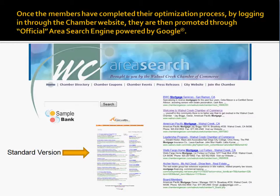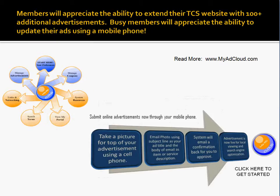This is the My Ad Cloud system. Once you've completed your Traffic Catcher page, you have the option to click a button to create your My Ad Cloud system, and we give you space for 1,000 ads. We now have a new mobile phone application that allows you to update your advertising very easily through a mobile phone.